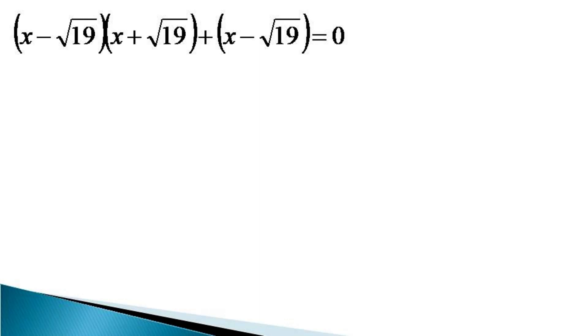We take common x minus root 19 and get x minus root 19 into x plus root 19 plus 1 is equal to 0.